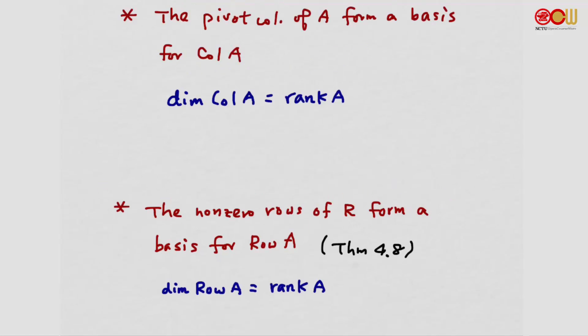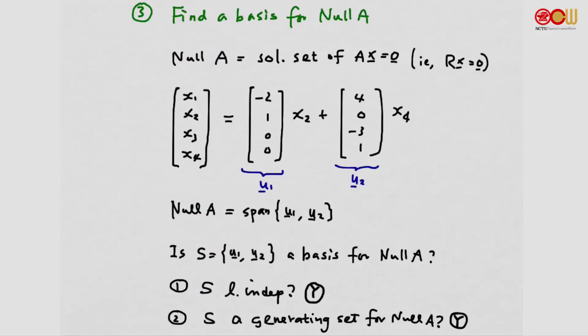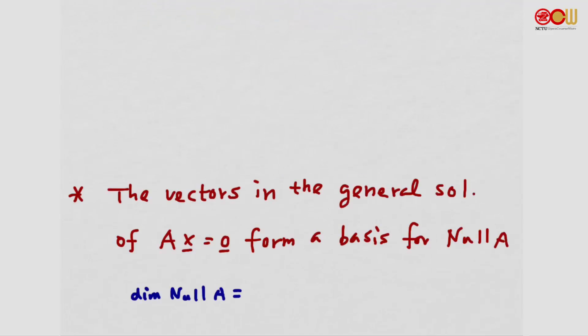So both the dimension of the column space of A and the dimension of the row space of A are equal to the rank of A. For the null space, we find the vector form of the general solution. These vectors are always linearly independent and always form a generating set for the null space of A, so they form a basis for the null space of A.